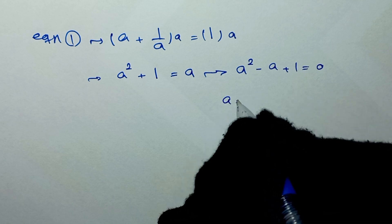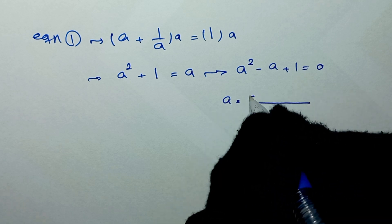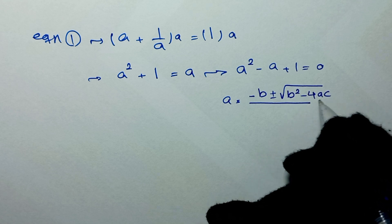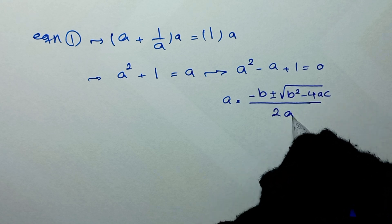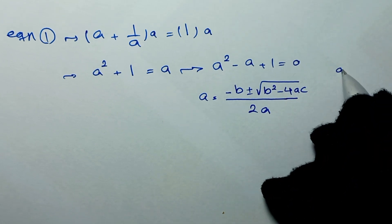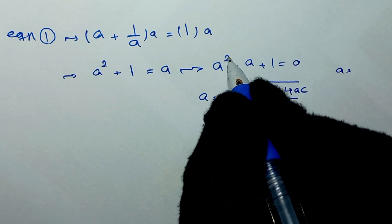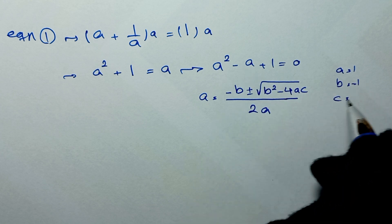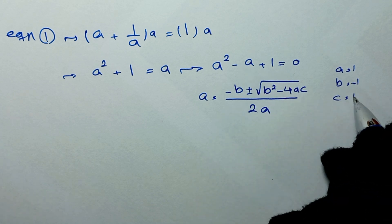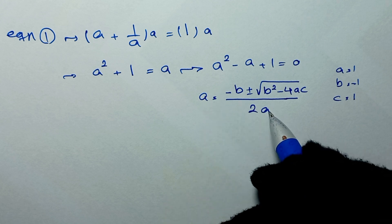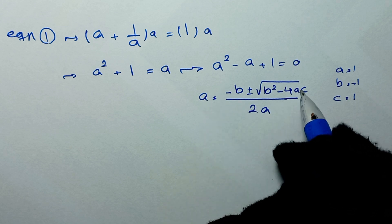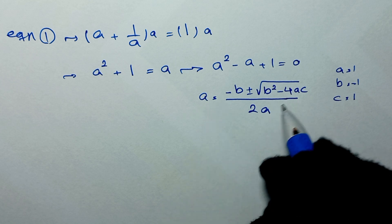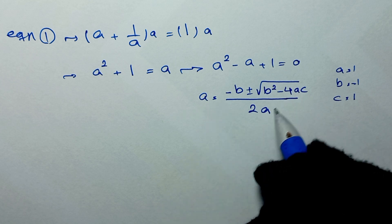From here we use the quadratic formula: x equals negative b plus or minus square root of b squared minus four ac, over two a. Here, the coefficient of a squared is one, the coefficient of a is negative one, and the constant c is one. Be careful — the 'a' in the quadratic formula is different from the variable 'a' in the equation.